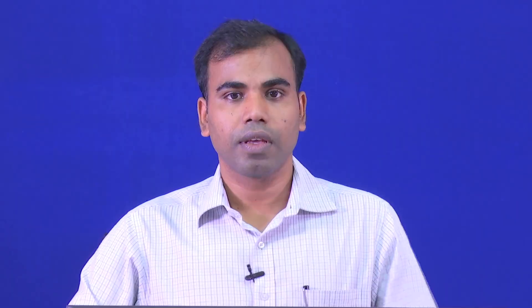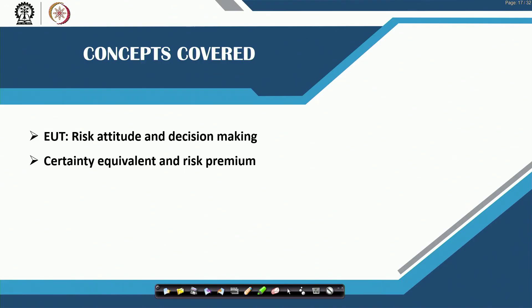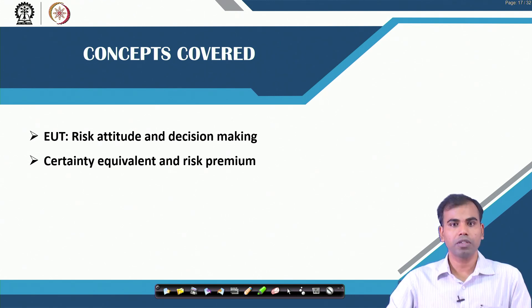Today we are going to discuss the decision making framework under the expected utility theory, where risk and uncertainty play an important role. Today's topics include examples of expected utility theory where risk attitude of economic agents and the decision making framework play a major role, and how we incorporate risk and uncertain situations in our decision making processes.